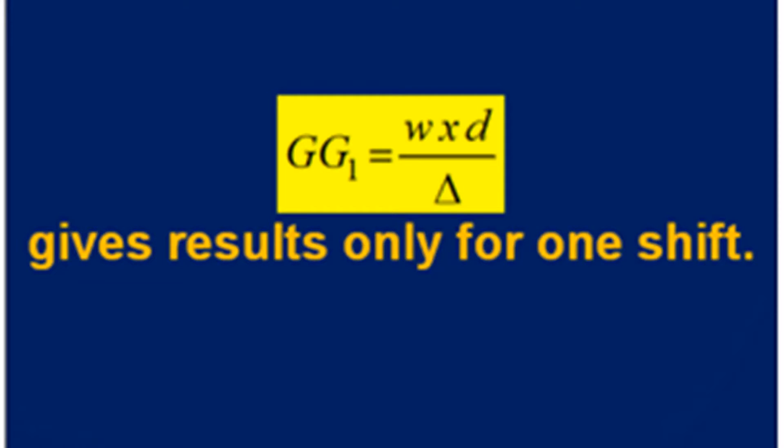In my last video I talked about the effect of loading, discharging, and shifting of a weight. When we cause a shift, there is a shift of the center of gravity that is parallel and proportional. When we load a weight, the center of gravity moves towards the point of loading, and the reverse happens when we discharge the weight.